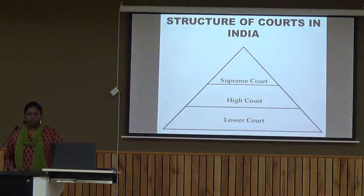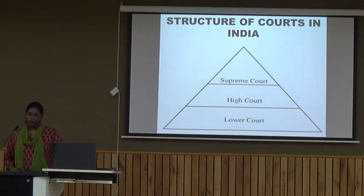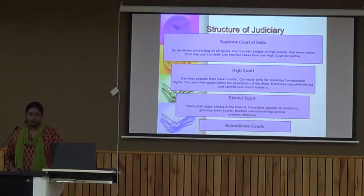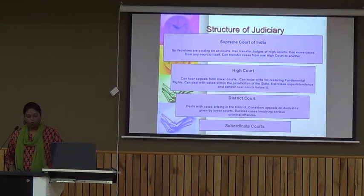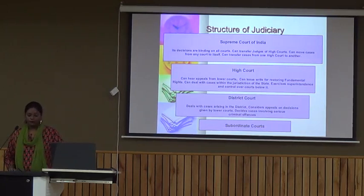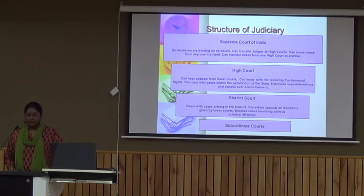There is a different structure of courts in India. As seen on the diagram, there is the Supreme Court as the highest court, followed by High Court, and then lower courts. The Supreme Court's decisions are binding on all courts; it can transfer judges of High Courts, move cases to itself, and transfer cases from one High Court to another. High Courts can hear appeals from lower courts, issue writs for restoring fundamental rights, deal with cases within the jurisdiction of the state, and exercise superintendence and control over courts below them.